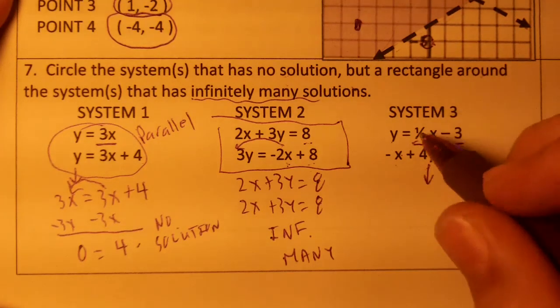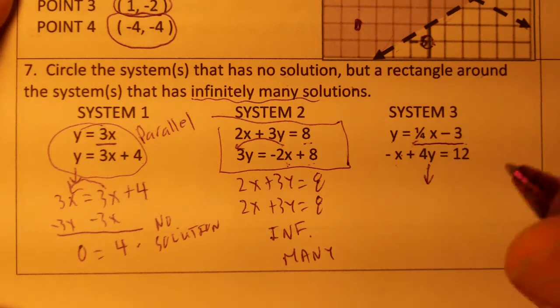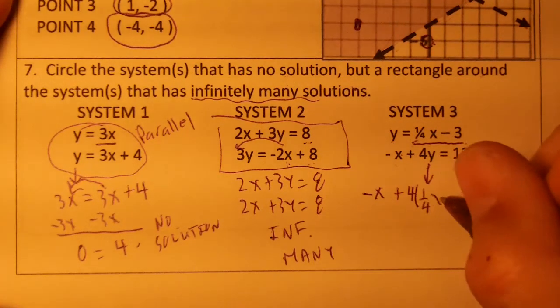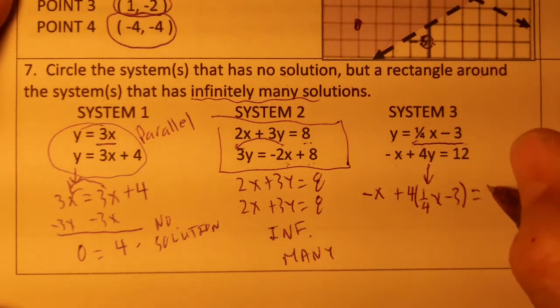I'm going to replace that y with 1/4x minus 3. So I'm going to have negative x plus 4, parentheses, 1/4x minus 3 equals 12.